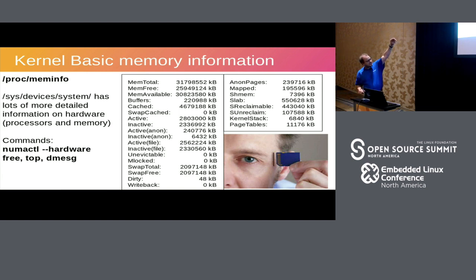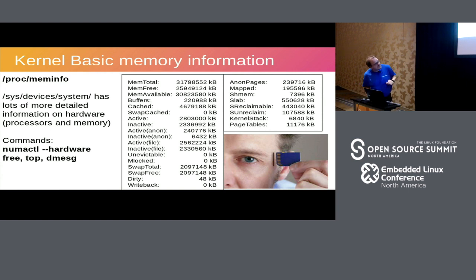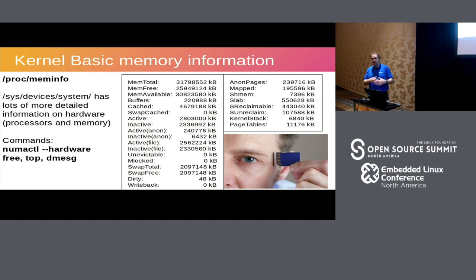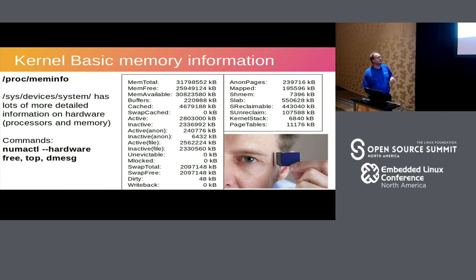There are anonymous pages, mapped pages, and various administrative kernel structures: slab pages, kernel stack, and page tables. There are about 11 megabytes of page tables — these are pages used to map virtual addresses to physical addresses, which can be significant depending on the size of physical address ranges. For a couple-of-terabyte process it will use a significant amount of page tables. On 32-bit systems with special address extensions, this actually causes out-of-memory issues.